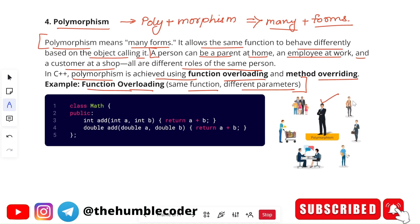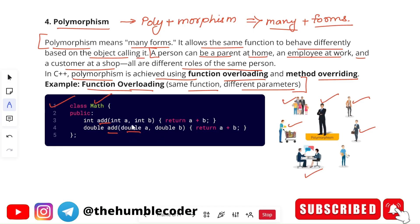Here is an example of polymorphism: we have a Math class with an 'add' function taking integer parameters a and b and returning a+b. We also have another 'add' function where the type of variables is different and the return type is also different. Although the function name is the same, it has different forms — that is why this is an example of function overloading, which is a type of polymorphism.